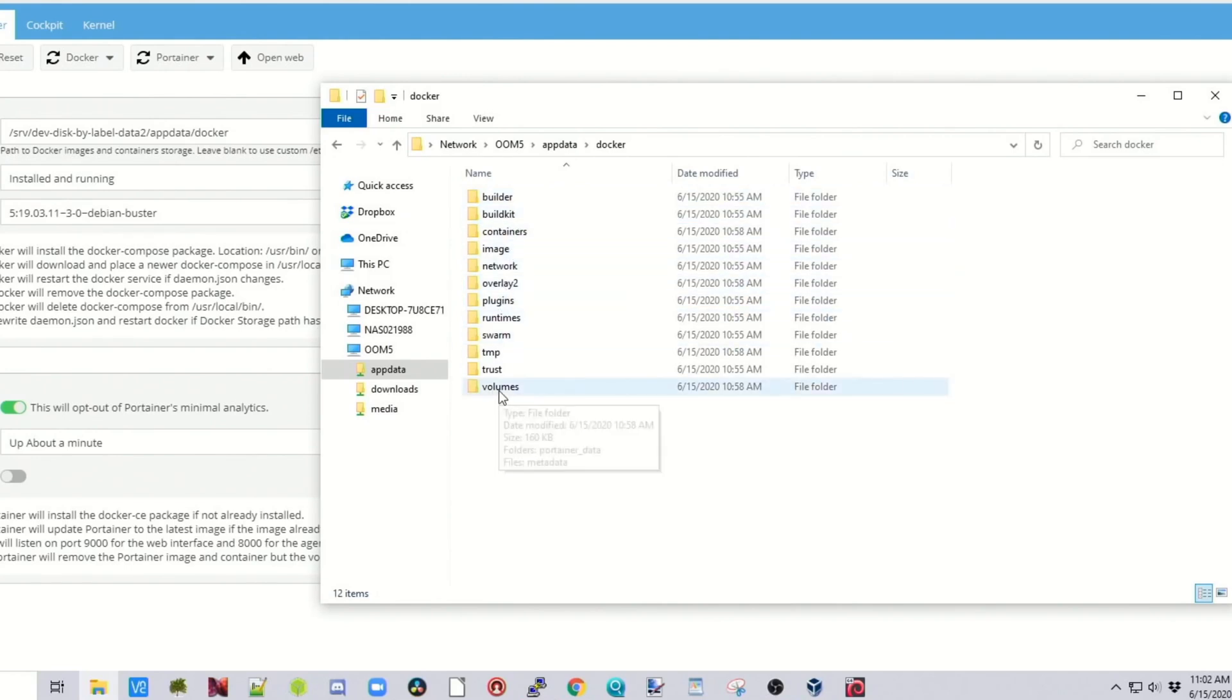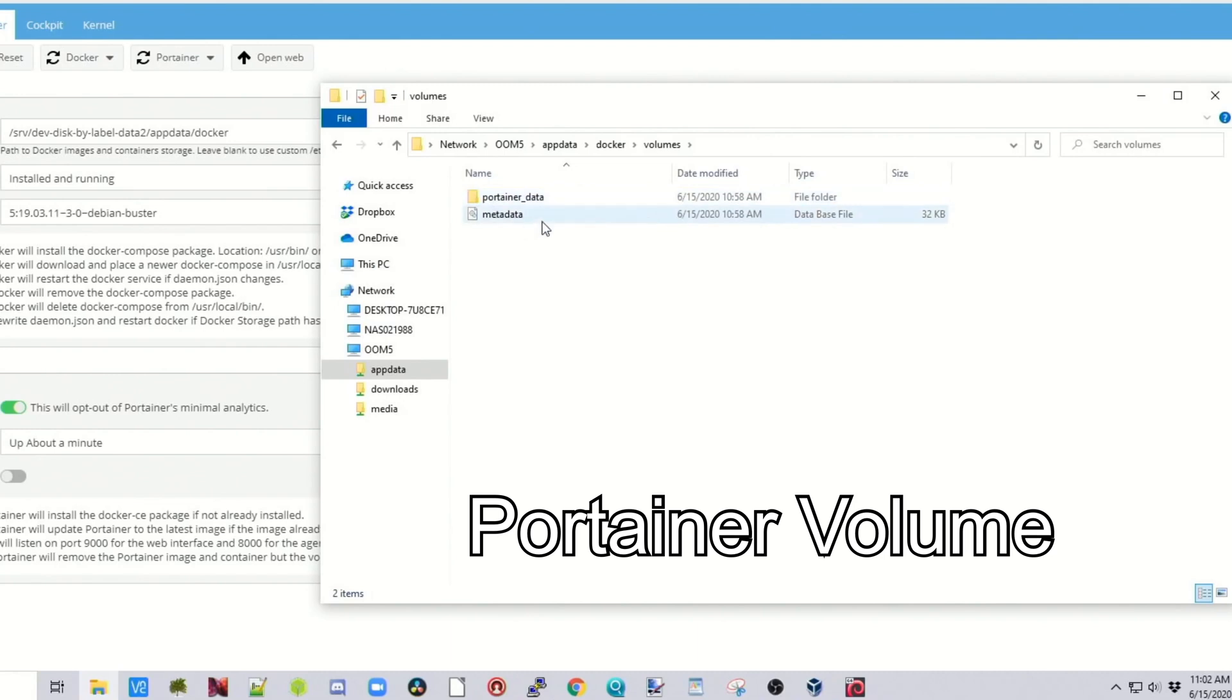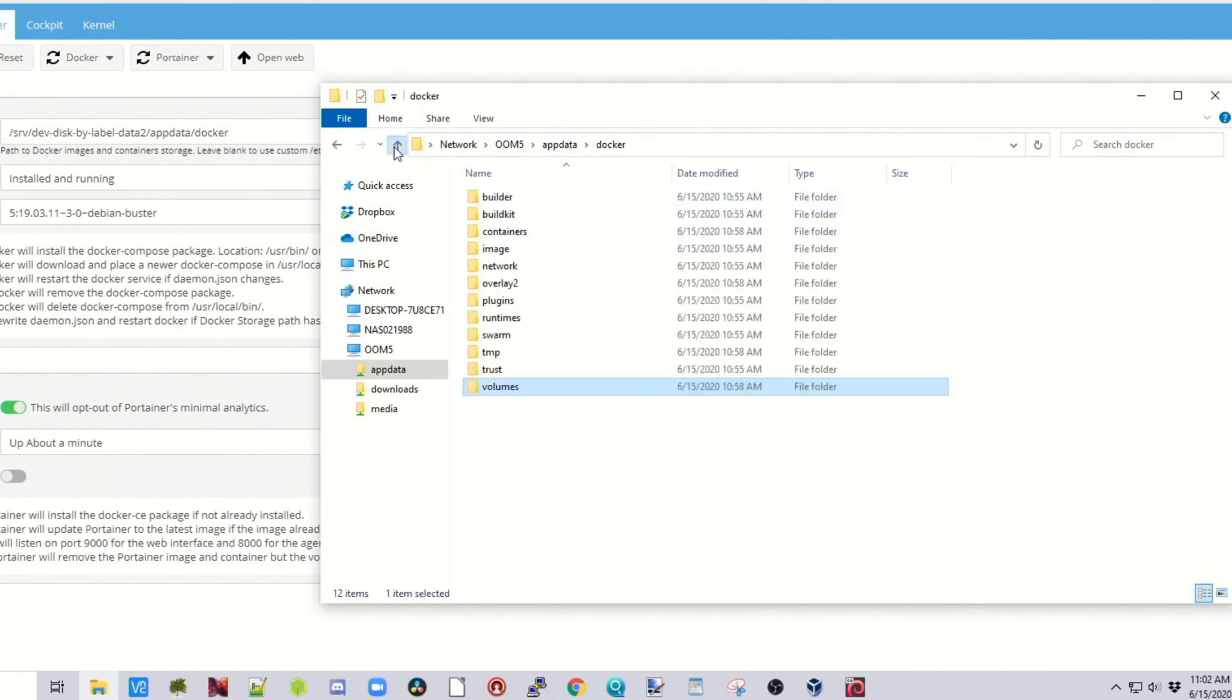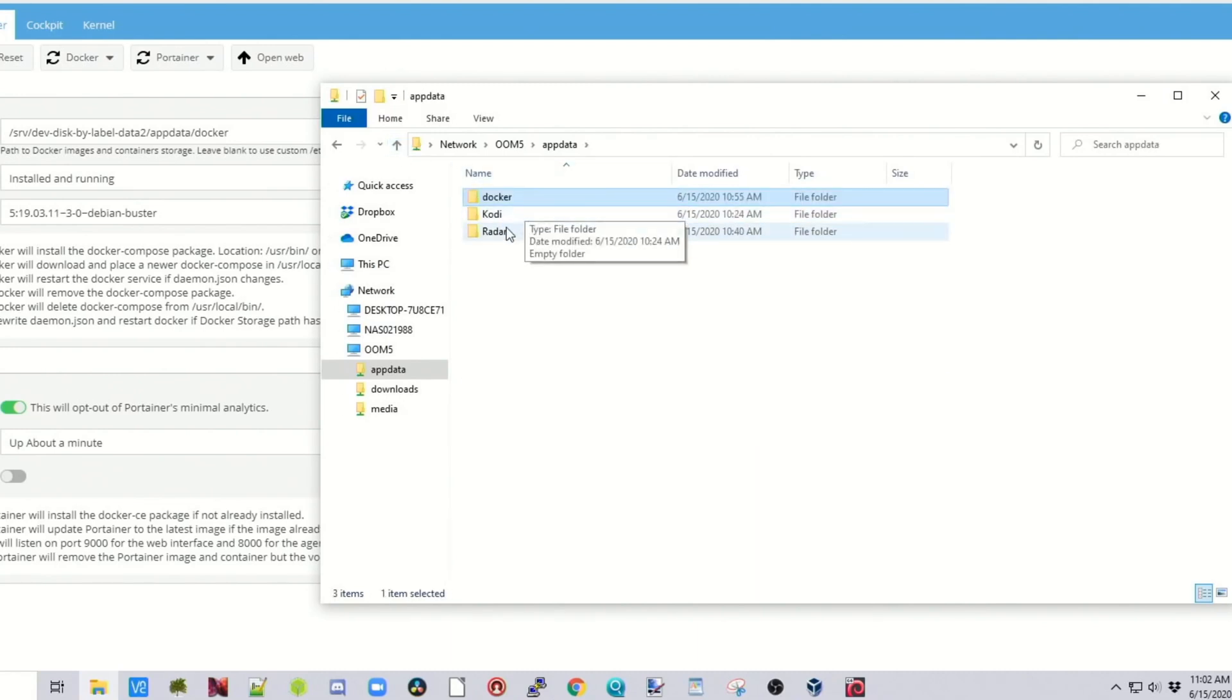Now if we click on Volumes, we can see there is our Portainer data. So let's go back and let's try installing Radar and see how that works and see if we can get it back to this point.